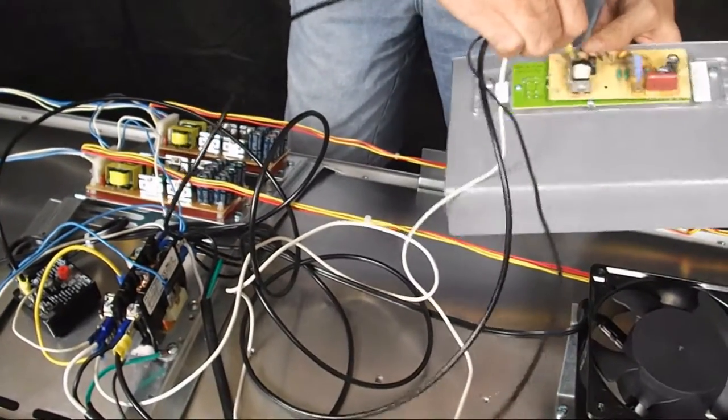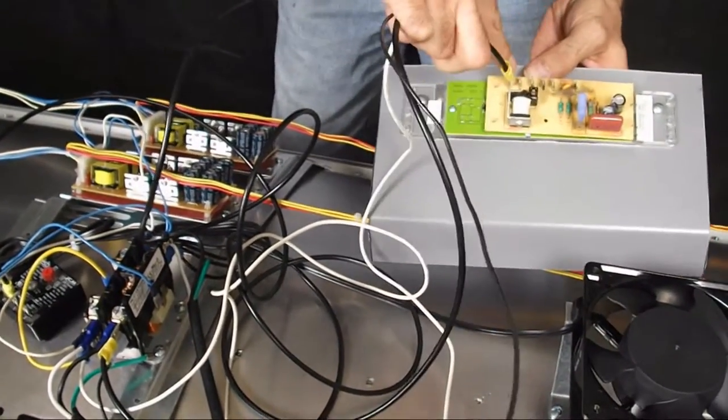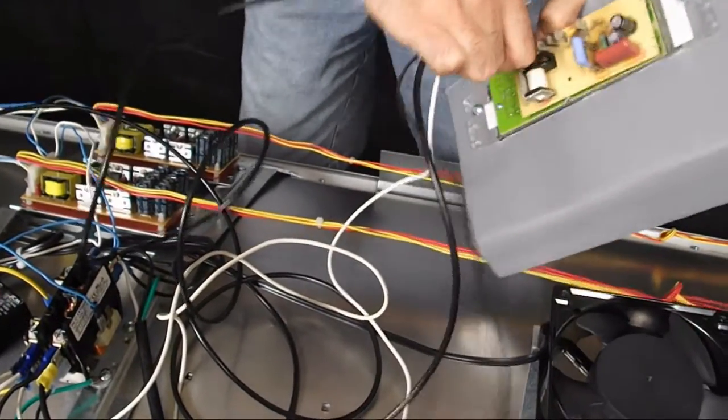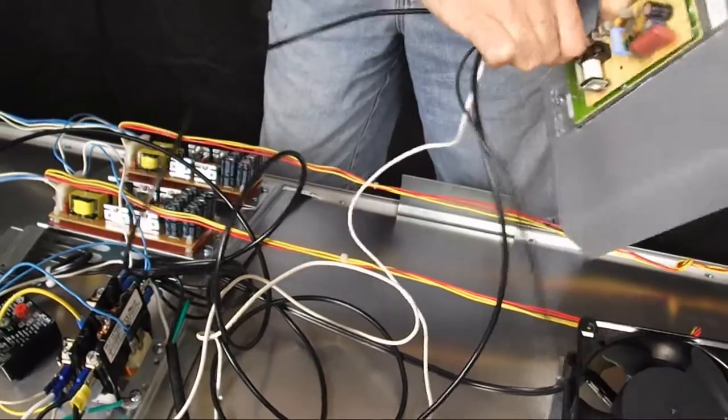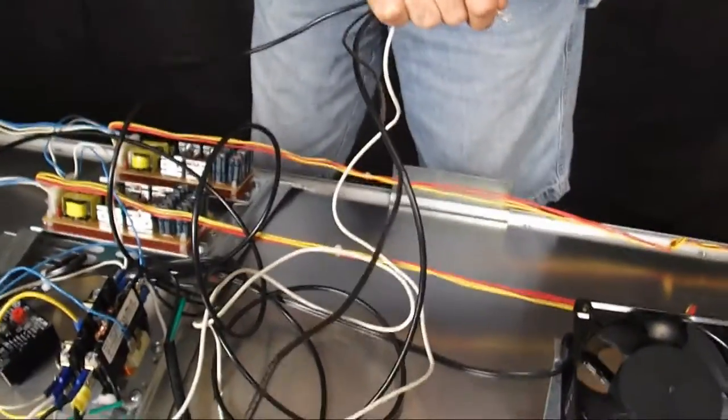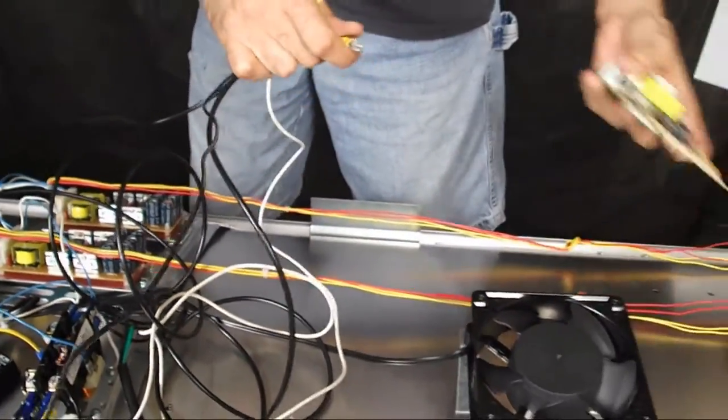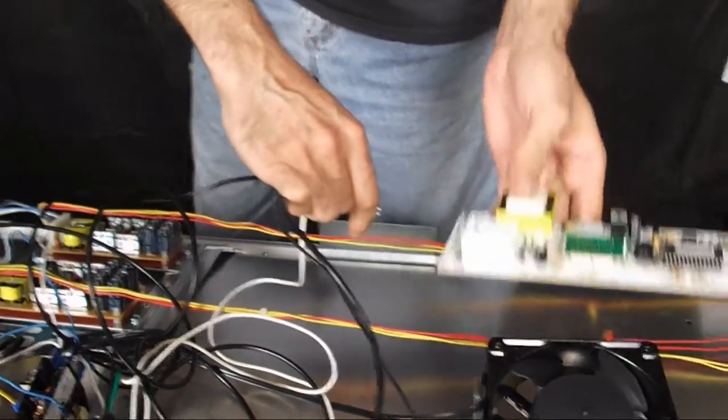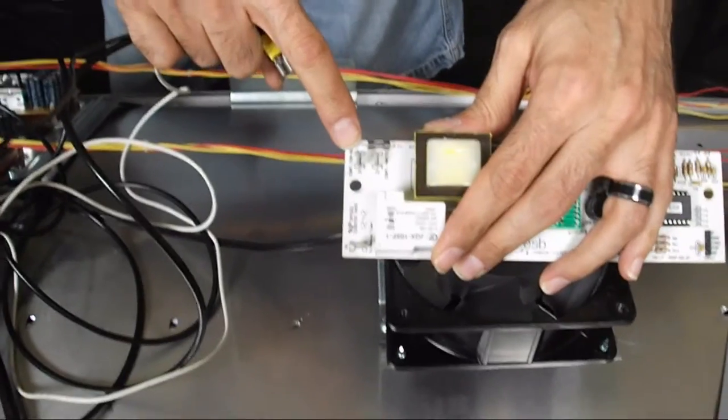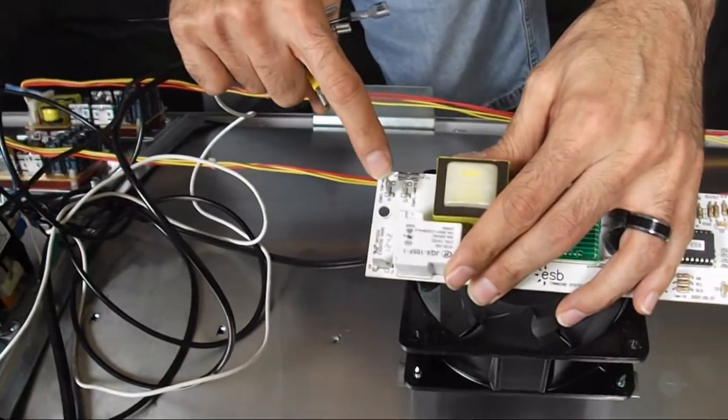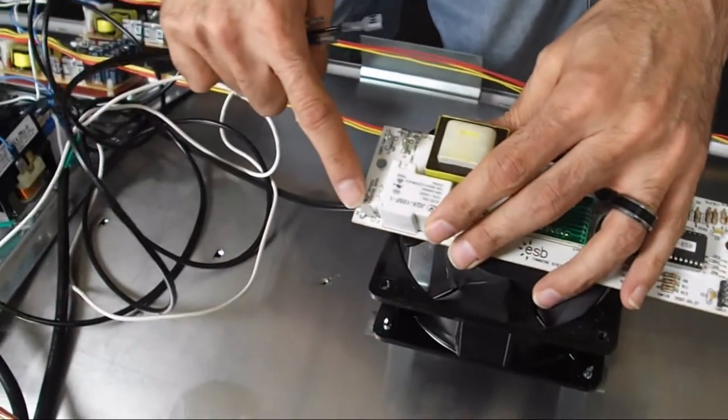And, it's not necessary to note the J terminal configuration, because it's different on the new timer. I'm going to show you how to correctly wire the new timer right now. First, notice that there's only three terminals on this replacement timer: J1, J2, and J6.